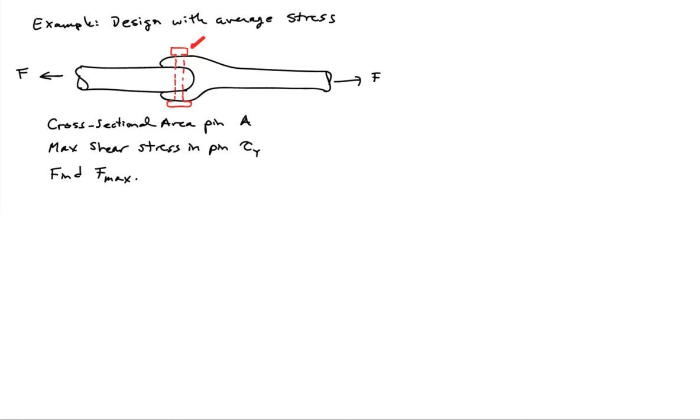The pin is carrying loads, so it transmits loads from bar one over to bar two. The cross-sectional area of the pin is given to us as A, and we know that the pin can carry a max shear stress of τ_y. So τ_y is the yield stress in shear for the material that the pin is made out of.